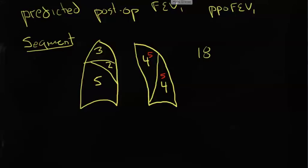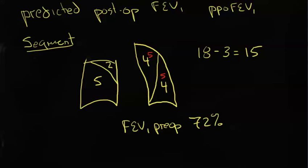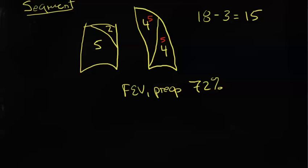Let's imagine we're doing a right upper lobectomy. If we're going to do a right upper lobectomy, then the right upper lobe goes away, and what we're left with is a total of 15 segments. If the patient's preoperative FEV1 was about 72%, let's say,